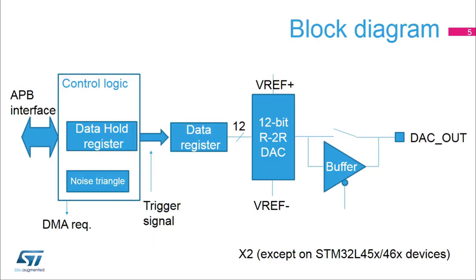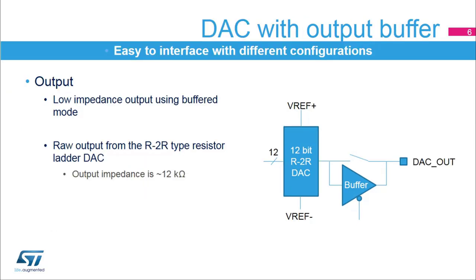Here you can see the simplified block diagram of the Digital to Analog Converter. The STM32L4 integrates two of them, except on STM32L45X/46X devices where only one DAC is implemented. The DAC output can be buffered for low impedance loads. When unbuffered, the output is directly connected to the R2R resistor ladder network type of DAC.